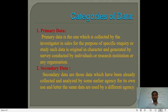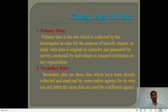Secondary data are those data which have already been collected and analyzed by some earlier agency for its own use, and later the same data are used by a different agency. Secondary data means data which is already collected but used a second time. Data collected originally becomes secondary data when used again.